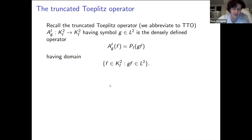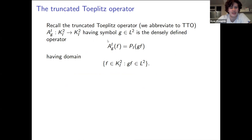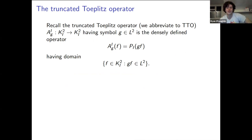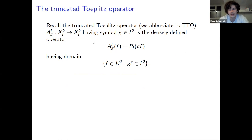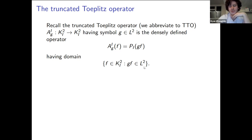We've already seen a definition of a truncated Toeplitz operator today. The TTO is defined by taking a function in a model space, multiplying it by some function g — which you call the symbol of the TTO — and in general this will lie in L^2, and then projecting back to your model space. In general, this is a densely defined operator, with domain consisting of functions in the model space for which multiplication by g stays in L^2.